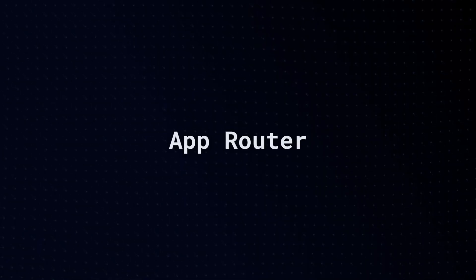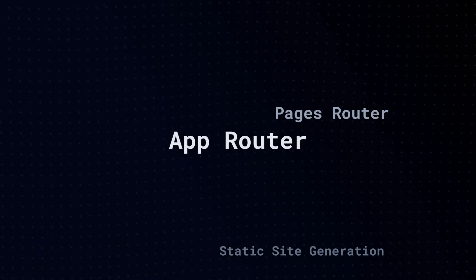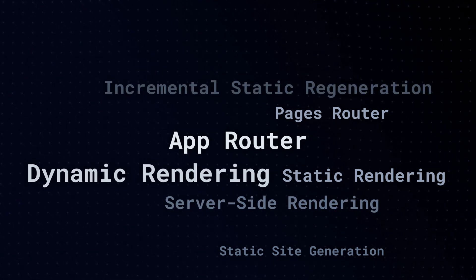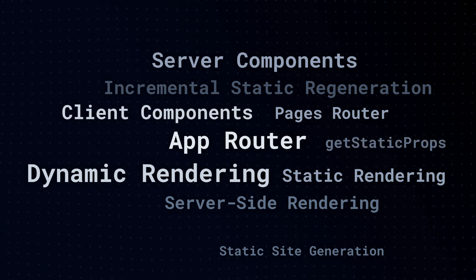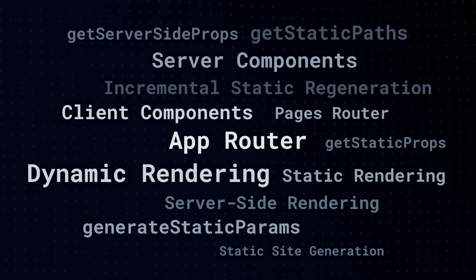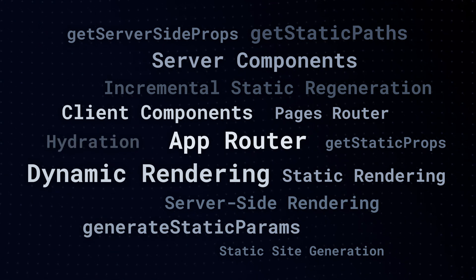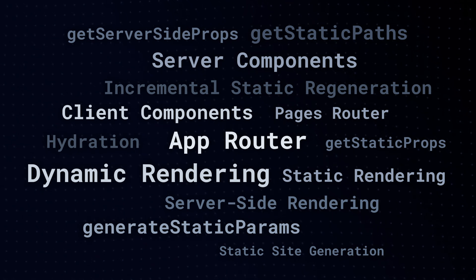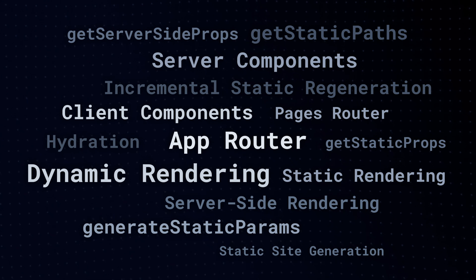Do you know the difference between app router, pages router, static site generation, static rendering, server-side rendering, dynamic rendering, incremental static regeneration, server components, client components, getStaticProps, getServerSideProps, getStaticPaths, generateStaticParams, and hydration? With Next.js 13, a lot has changed, and it's just too much to keep track of and confusing to know what's really happening. But today we try to clear up the confusion once and for all.